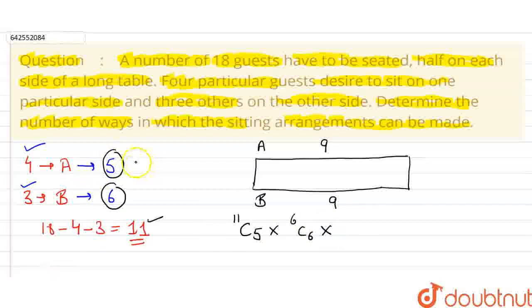Now, A side has the 9 guests selected and seated and B side also has 9 guests selected and seated because 4 and 3 guests are fixed on the A side and B side respectively.